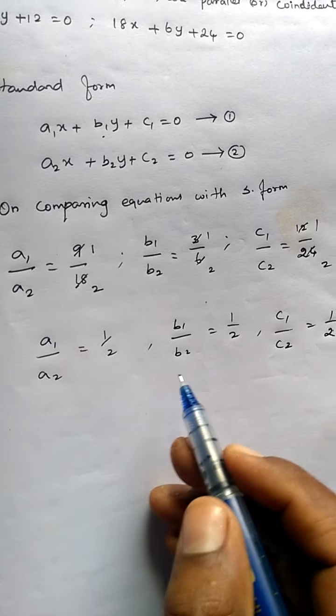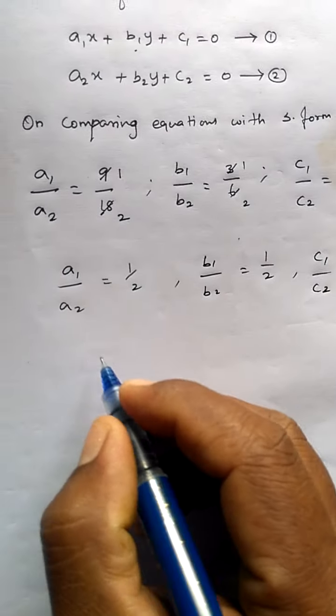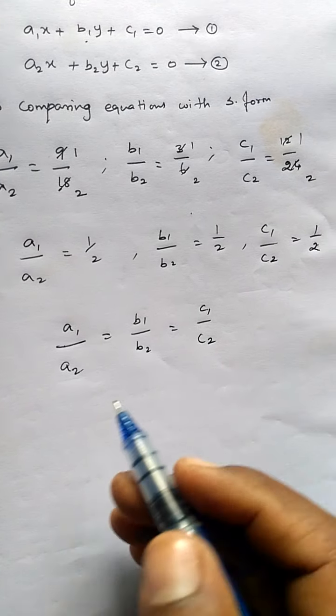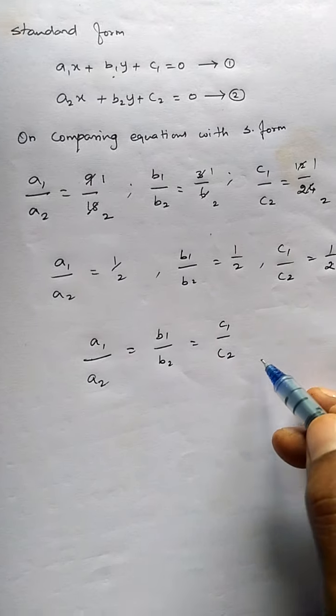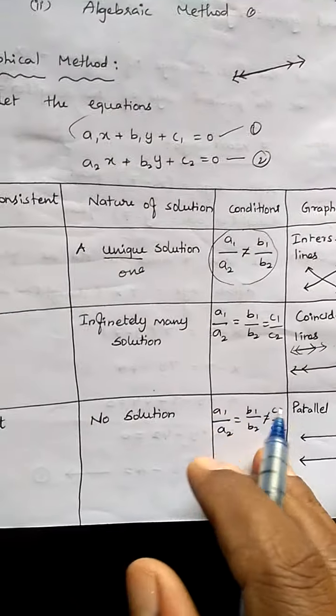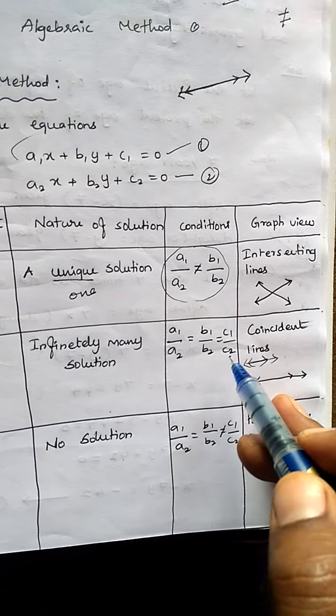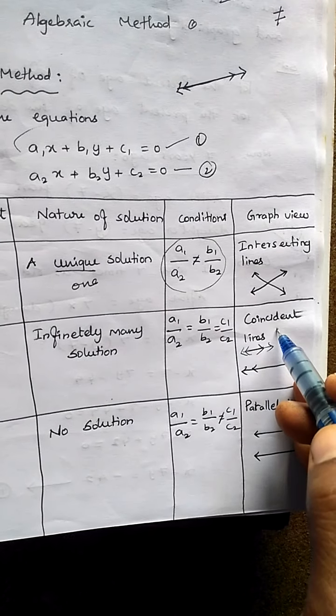Now all three ratios are equal. We already have that formula in the tabular column, so we can say a1 by a2 equal to b1 by b2 equal to c1 by c2, because all three ratios are equal. If all three ratios are equal, let's recall the tabular column formula. The formula is a1 by a2, b1 by b2, c1 by c2. If all three ratios are equal, what kind of lines are they?